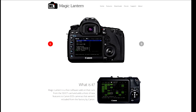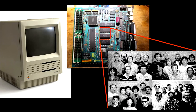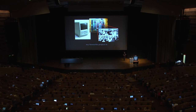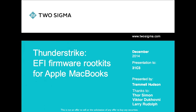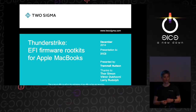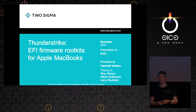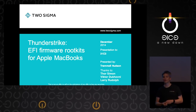Reverse engineering is a hobby of mine. One of my more famous projects is the Magic Lantern firmware for Canon cameras — a GPL'd runtime that lets you write your own software. I also enjoy retrocomputing and digging through old computers' ROMs to find Easter eggs, such as the Mac SE that contains four photos of the team that worked on it in the mid-'80s. I'd like to thank my firm, Two Sigma Investments, and my colleagues Thor Simon, Victor Duchovny, and Larry Rudolph for their assistance.